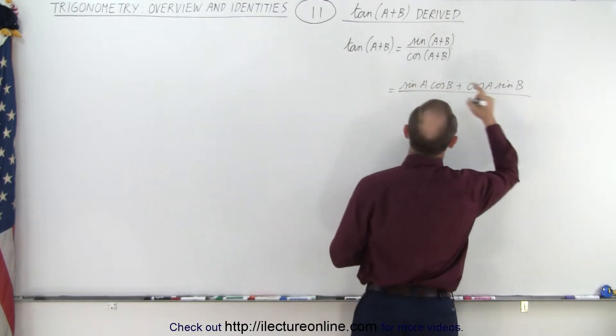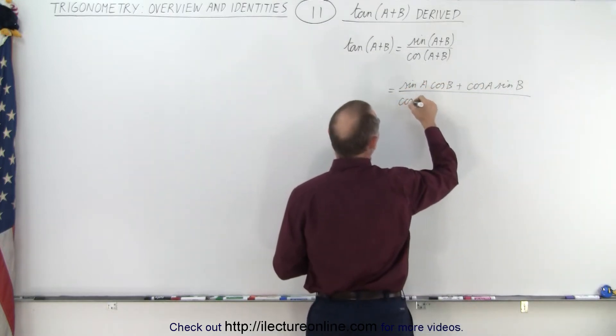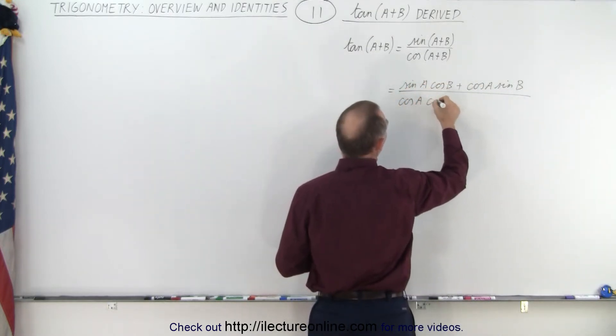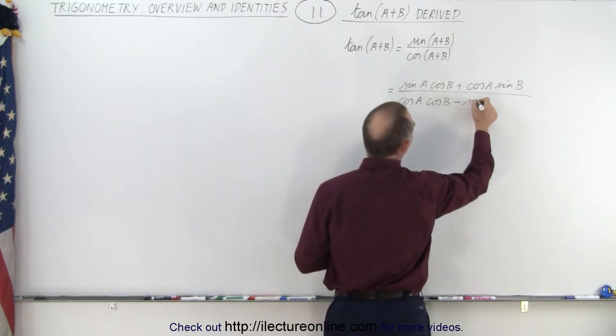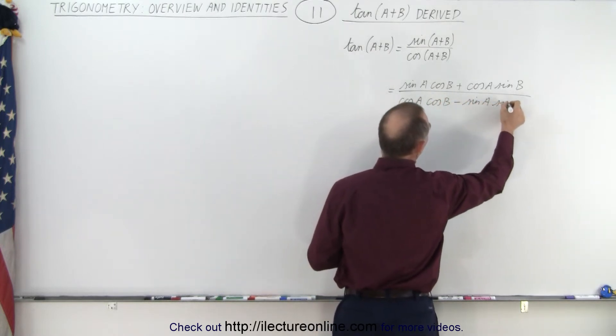all divided by, and here we get the cosine of A cosine of B. Here's the minus sine of A and sine of B.